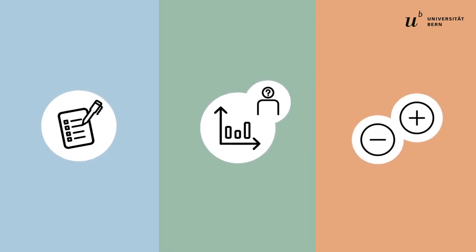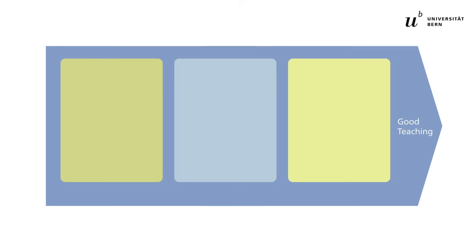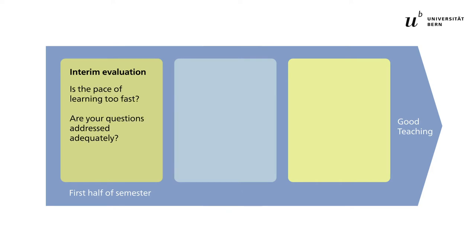In order to evaluate all important areas of teaching, factors and criteria of good teaching are covered in three parts. The first part is the interim evaluation. This one takes place in the first half of the semester and focuses on questions such as: Is the pace of learning too fast for you?